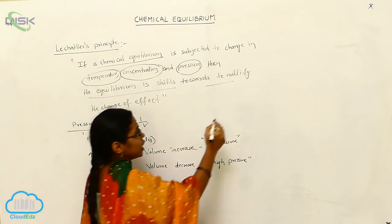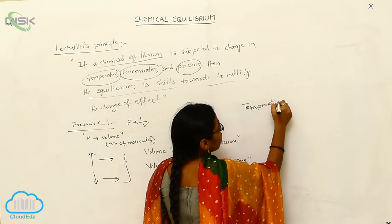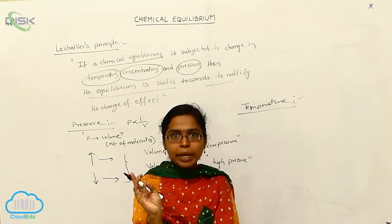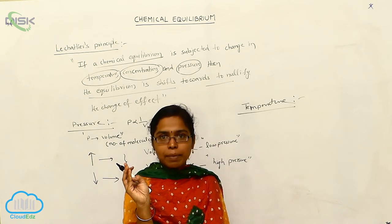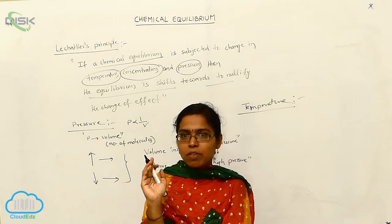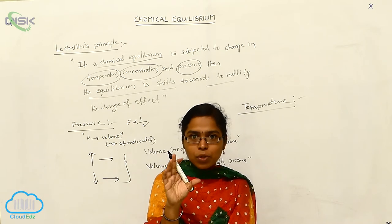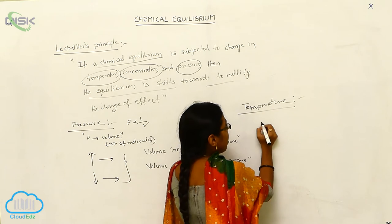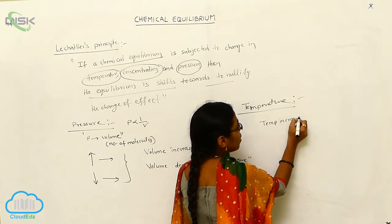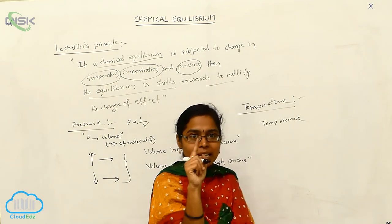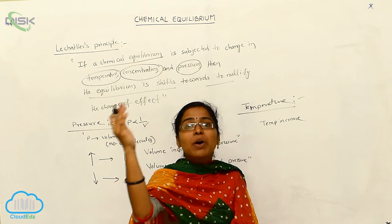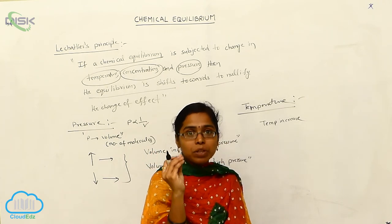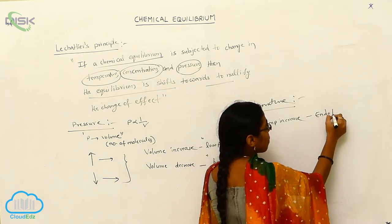Second effect is temperature. Based upon the temperature effect, we know that reactions are two types: exothermic reactions and endothermic reactions. Exothermic reactions are heat-energy-evolving reactions. Endothermic reactions are heat-energy-absorbed reactions. Whenever the temperature of our chemical equilibrium is increased, compulsory the chemical equilibrium should be shifted towards absorbing of heat energy — that means towards endothermic reactions.